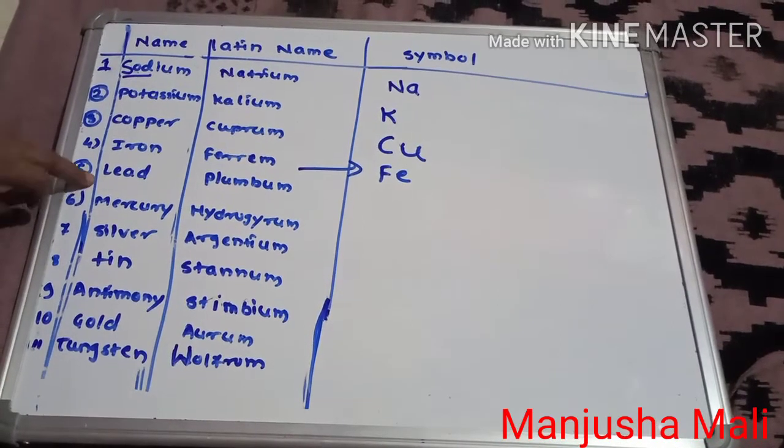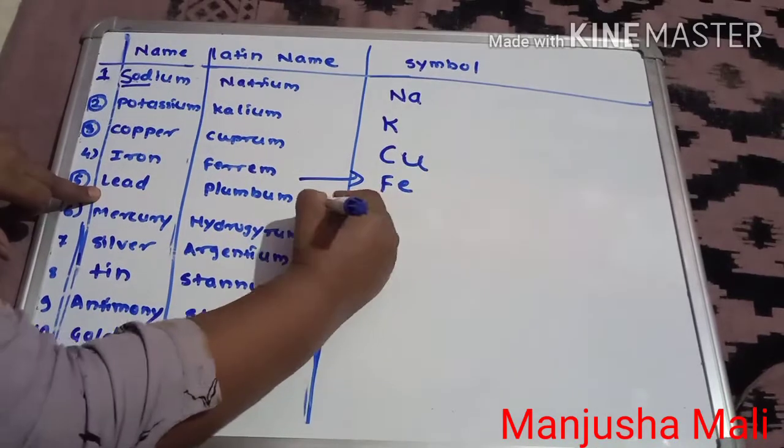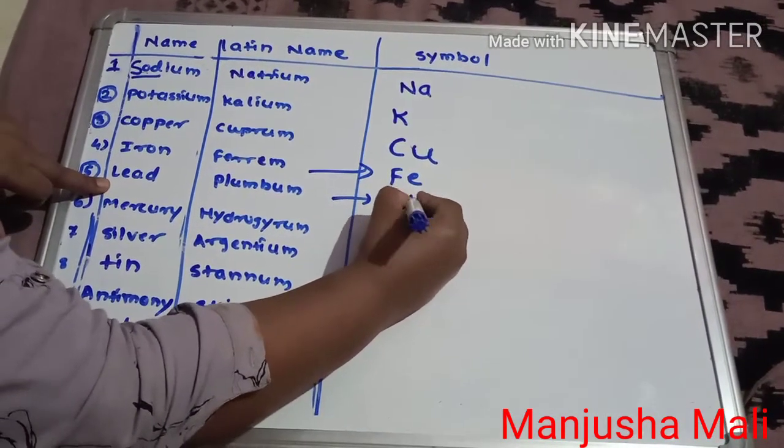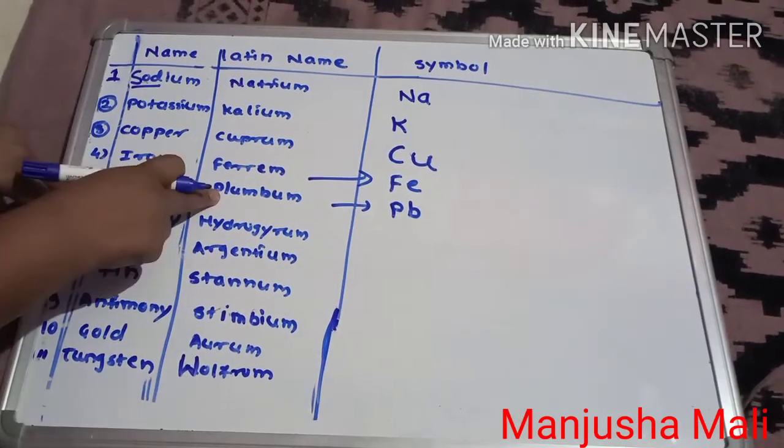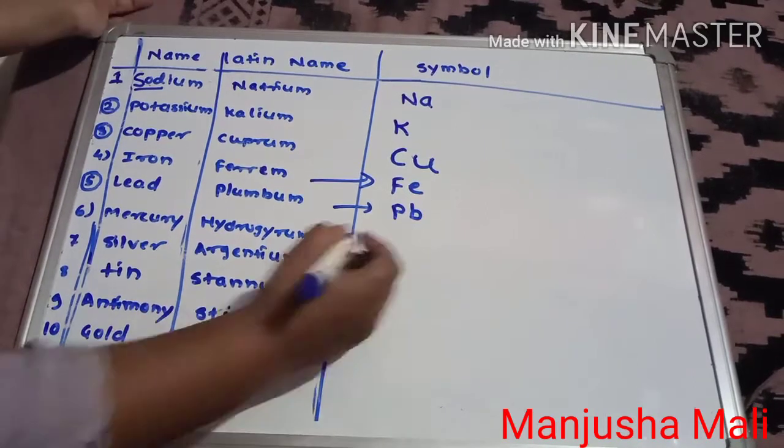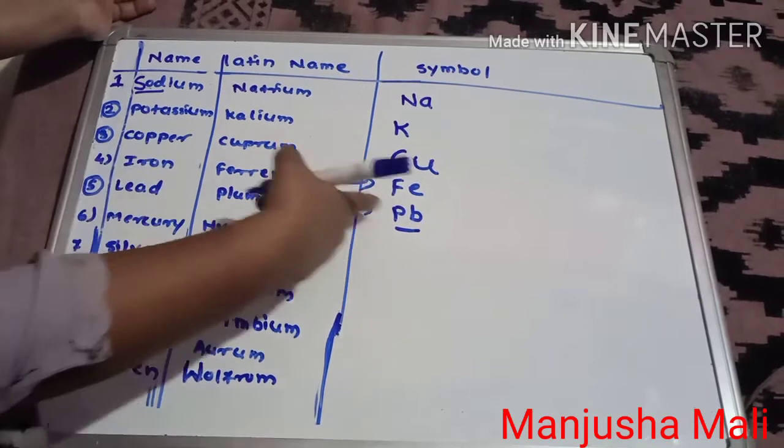Lead. Now lead means lead pencil. Now lead pencil means P. P-B, Plumbum. Lead. It's the Latin name of lead, and the symbol of lead is Pb.